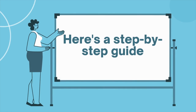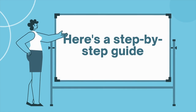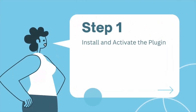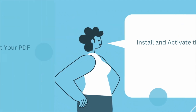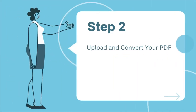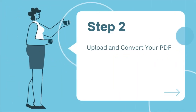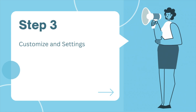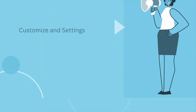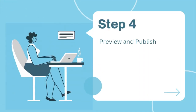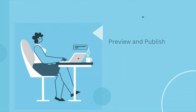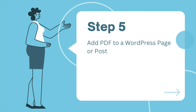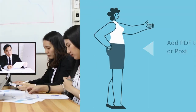Here's a step-by-step guide. Step 1: Install and activate the plugin. Step 2: Upload and convert your PDF. Step 3: Customize and settings. Step 4: Preview and publish. Step 5: Add the PDF to a WordPress page or post.